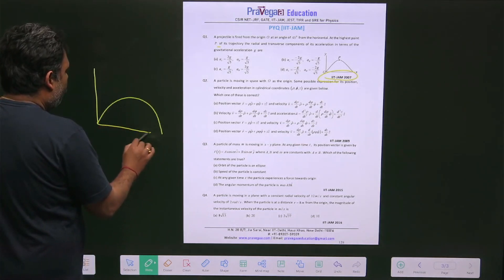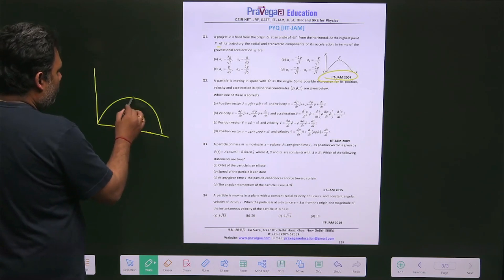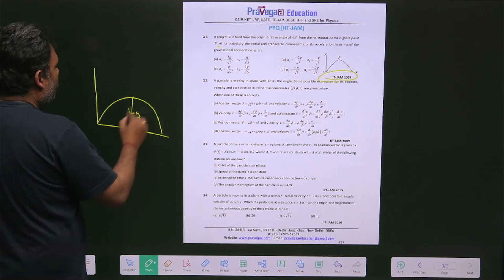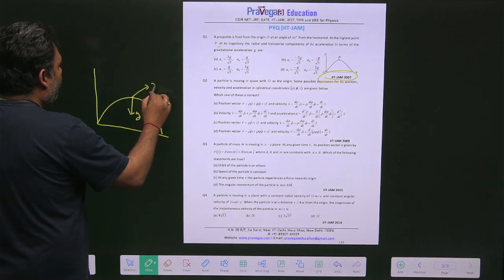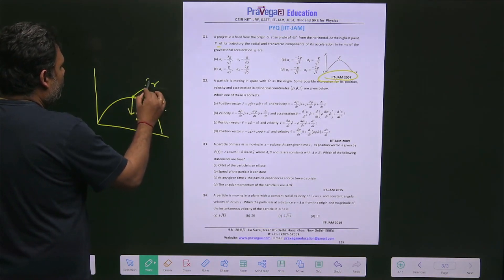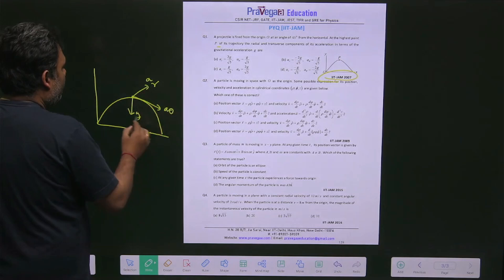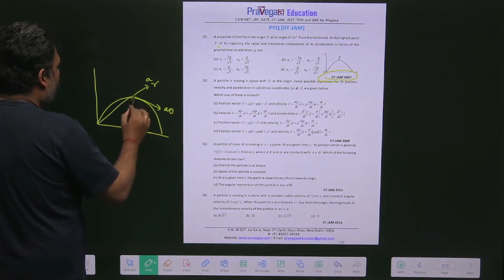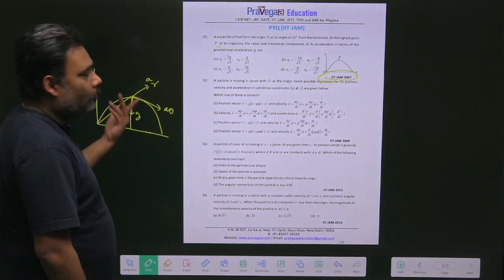In this question you have to find what will be the rate. So this is your direction of G. This will be your radial direction. This will be your tangential direction. So this is your AR, this is your A theta. The whole thing is that once you will calculate the value of theta you can easily get.